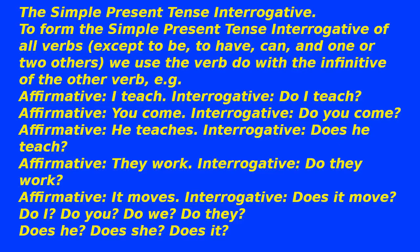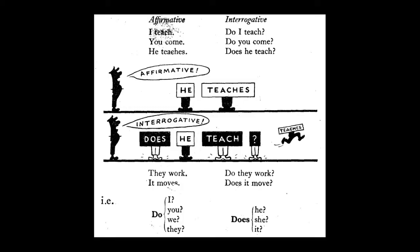The simple present tense interrogative. To form the simple present tense interrogative of all verbs — except to be, to have, can, and one or two others — we use the verb 'do' with the infinitive of the other verb. For example: Affirmative: I teach. Interrogative: Do I teach? Affirmative: you come. Interrogative: Do you come?